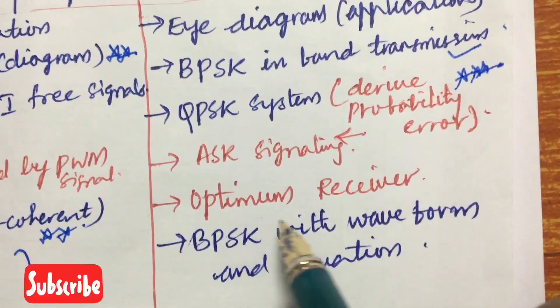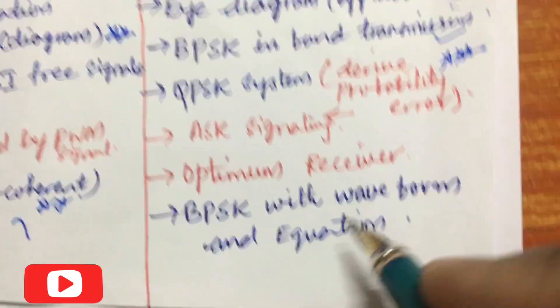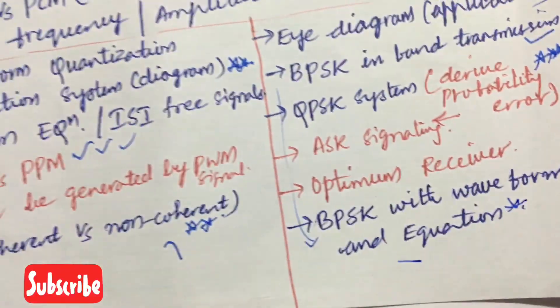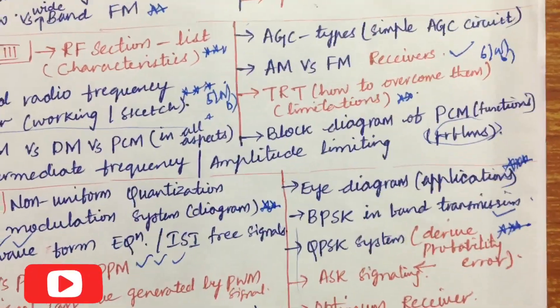And for the ASK signaling as well as optimum receiver, and BPSK with waveform and equation which I have written here once again, the equation is also asked several times. These are the gunshot questions whichever way I highlighted, maybe repeatedly, they are repeatedly asked and we can expect the same for this time also.